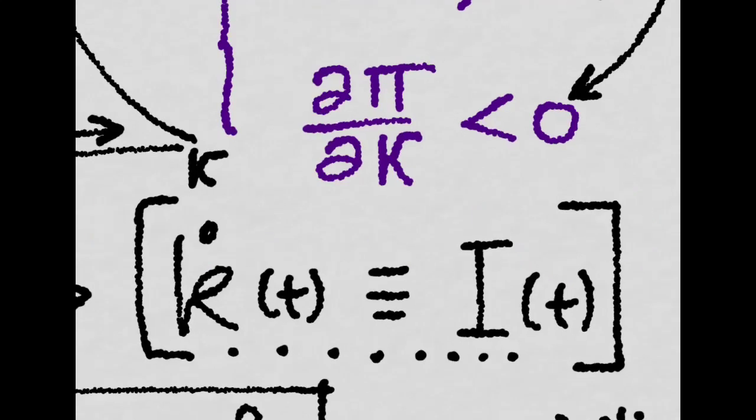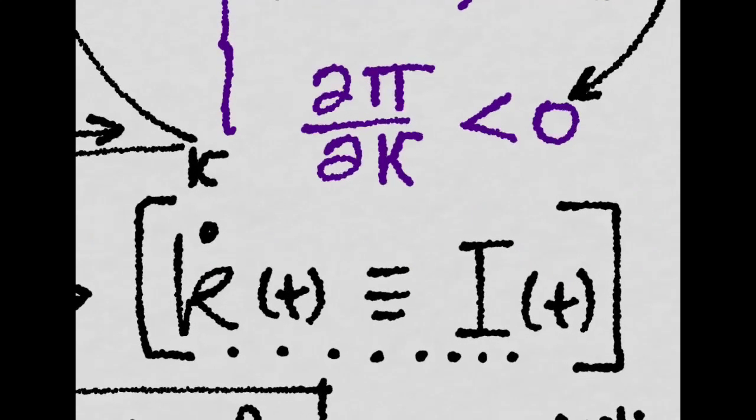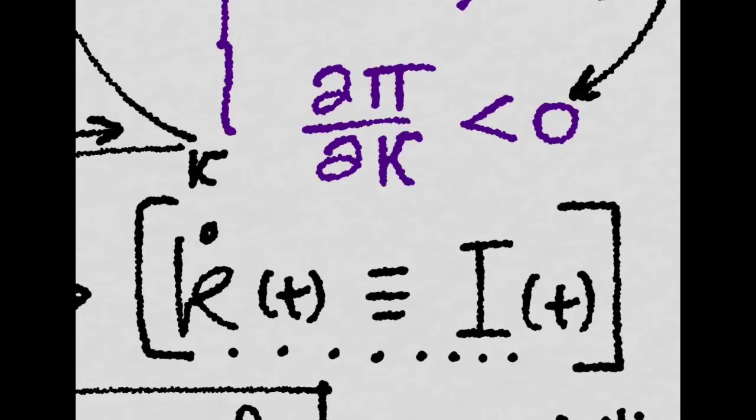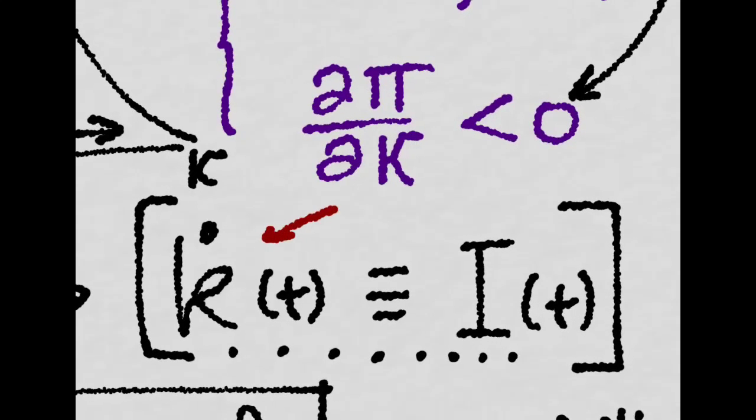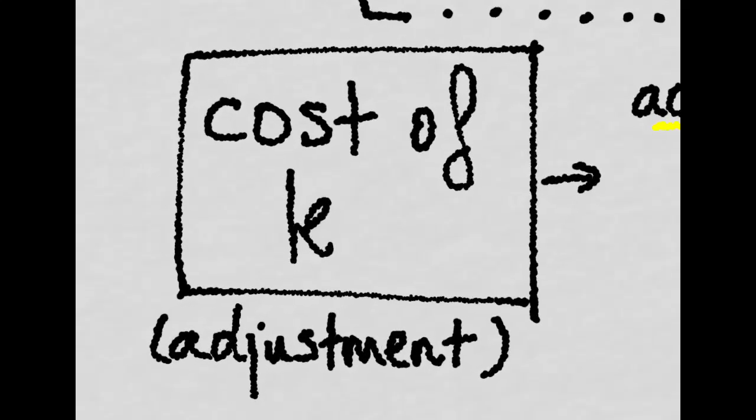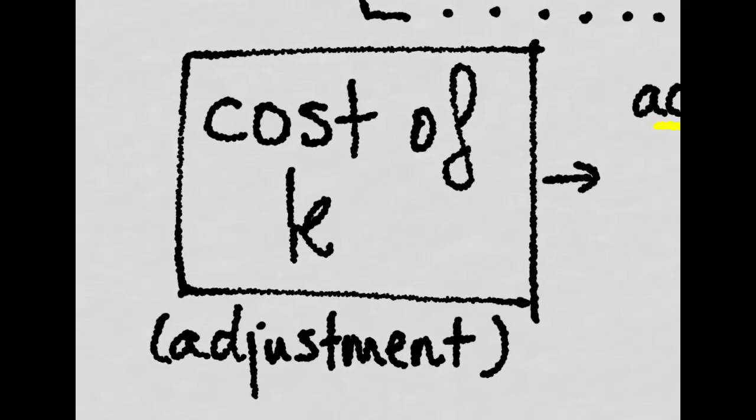Just to clarify, we're defining investment by a firm at period t as its adjustment in its capital stock. When a firm adjusts its capital stock, it faces two kinds of costs.